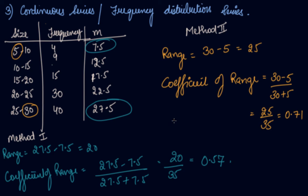This is how you find the measure of dispersion — that is the range — in case of continuous series. Either by taking the mid-values: first calculate the mid-value and then find out the range. Or you can simply find it by taking the upper limit of the last class and the lower limit of the first class.